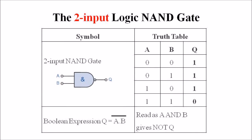The output Q will be one or high if and only if either of its inputs is zero. That is: 0 dot 0 gives 1, 0 dot 1 gives 1, 1 dot 0 gives 1, and 1 dot 1 gives 0. From this truth table it is evident that the NAND gate is just the inversion of the AND gate. The truth table of NAND is also the inverse truth table of the AND gate.